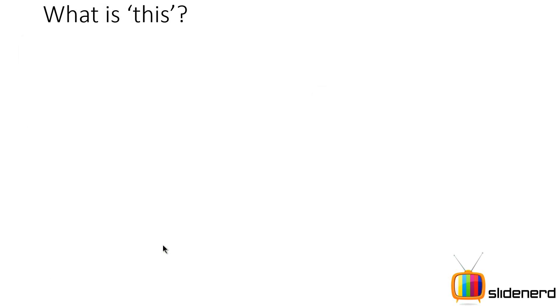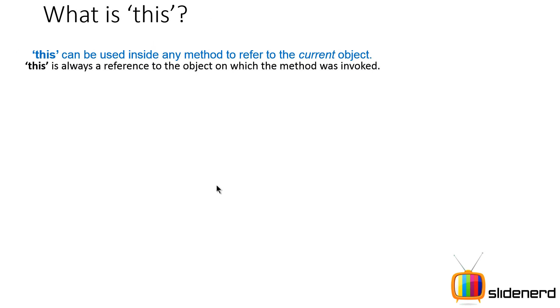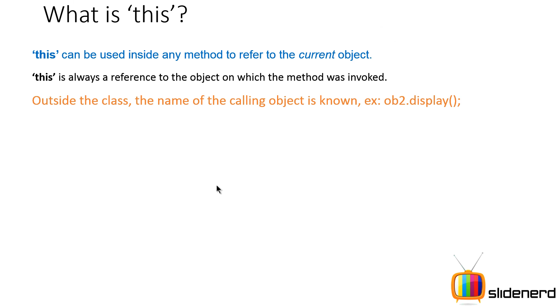So what is the 'this' keyword all about? The 'this' keyword can be used inside any method to refer to the current object. This is always a reference to the object on which the method was called. In other words, 'this' is a keyword in Java that contains the value of the current object wherever it is being written.